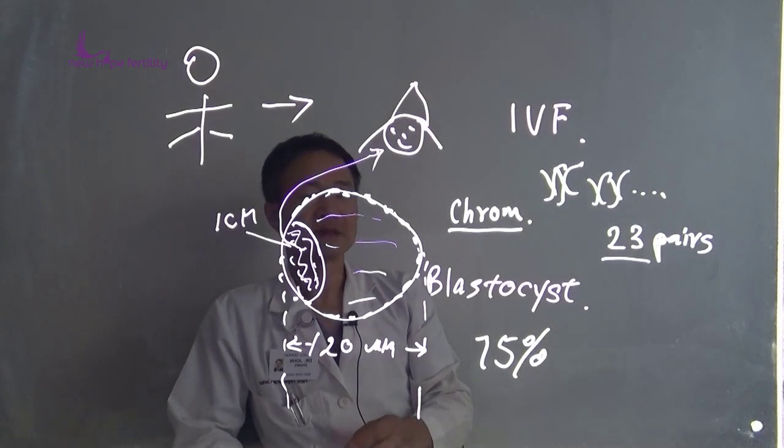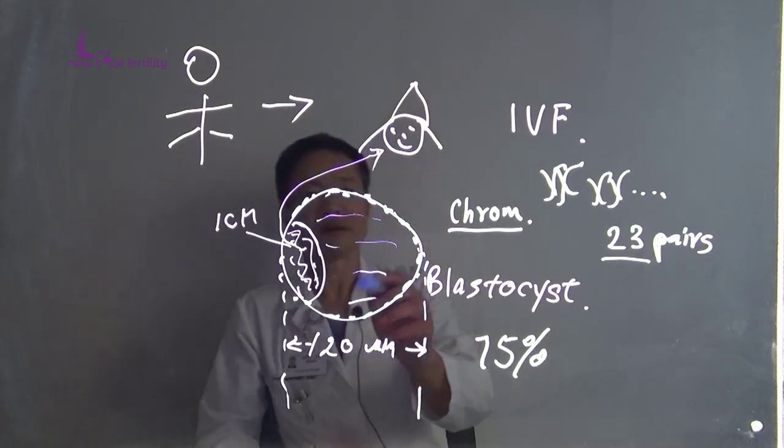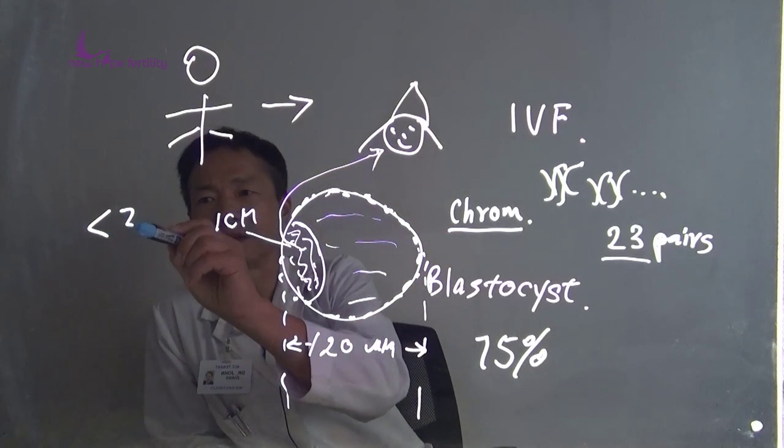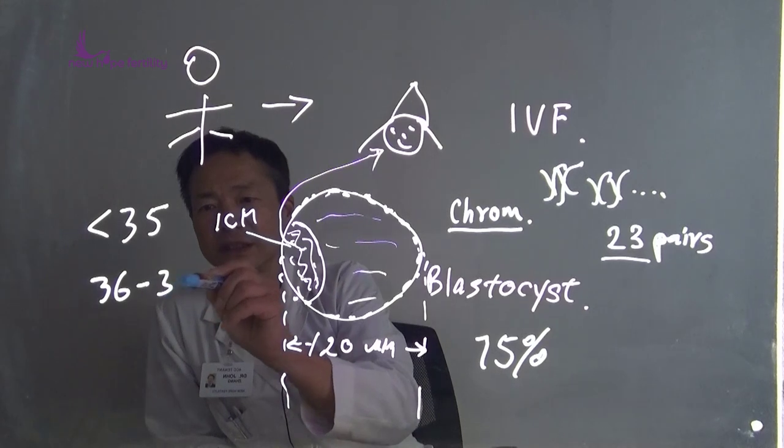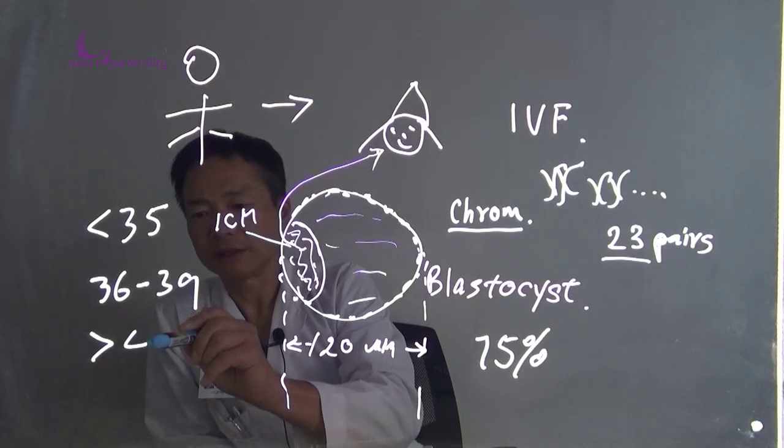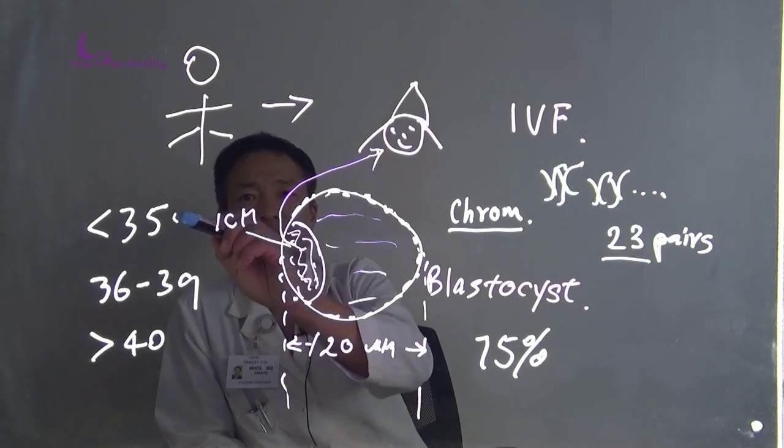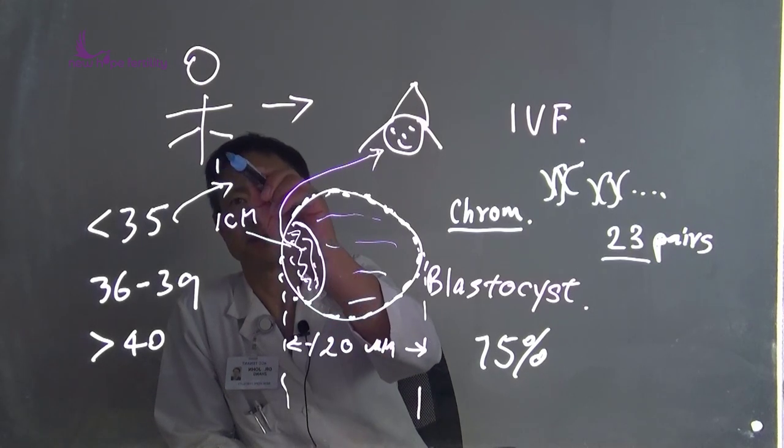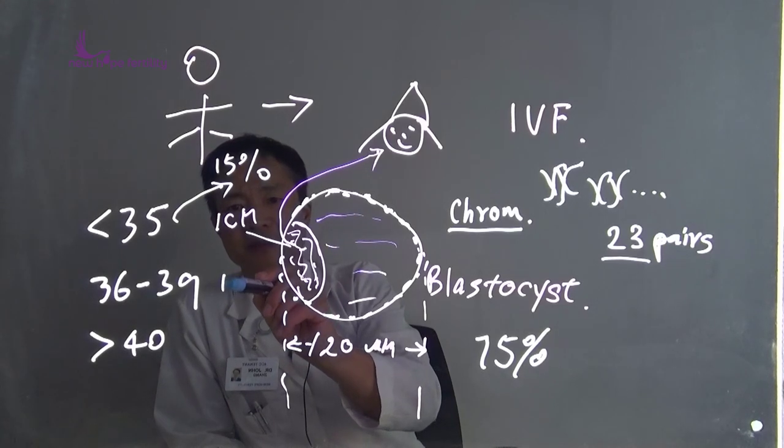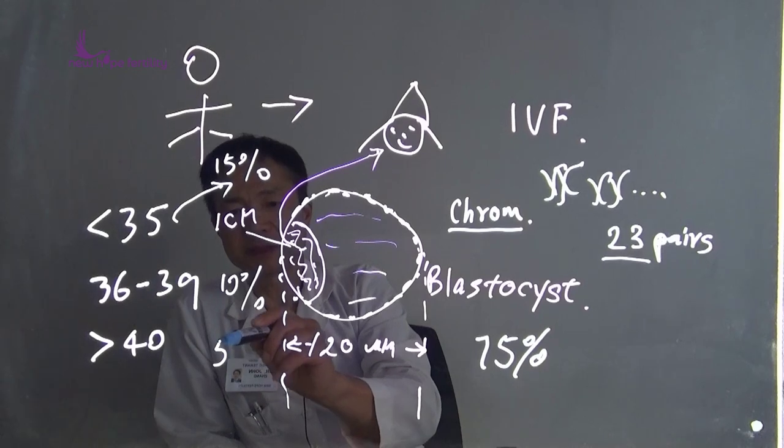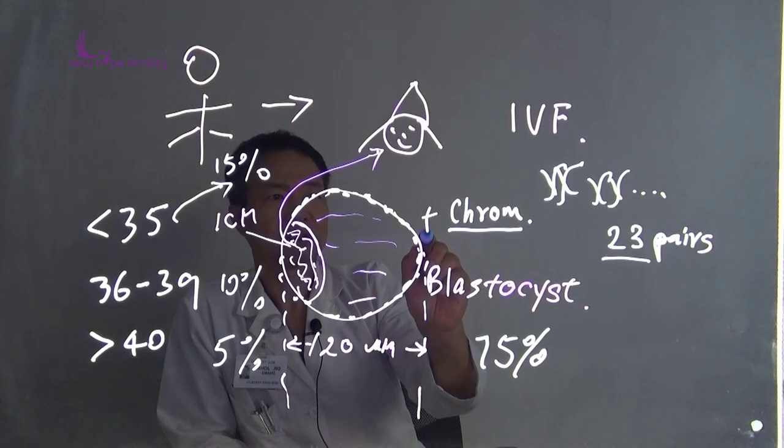So to assess a clinic quality, now you can see what's the chance of making this kind of embryo at age less than 35 years old, or 36 to 39 years old, or above 40 years old. Generally speaking, each oocyte, the chance of making this kind of embryo is around 15%.